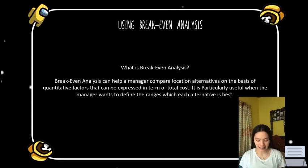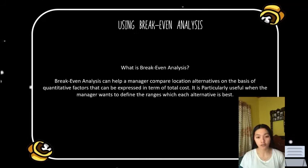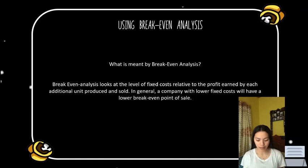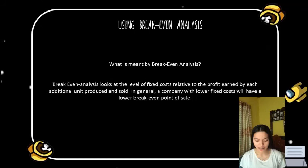Using break-even analysis: Break-even analysis can help a manager compare location alternatives on the basis of quantitative factors expressed in terms of total cost. It is particularly useful when the manager wants to define the range over which each alternative is best. Break-even analysis looks at the level of fixed cost relative to the profit earned by each additional unit produced and sold. A company with lower fixed costs will have a lower break-even point of sale.